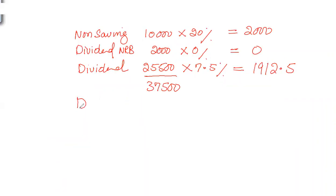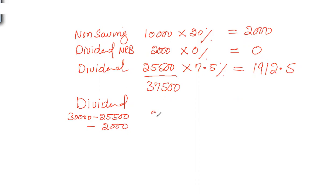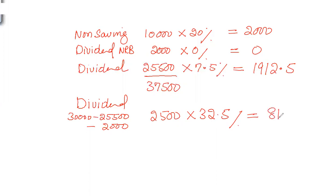Out of the £30,000 dividend, we have now covered £27,500 (£2,000 nil rate band + £25,500 at 7.5%). The remaining balance that falls in the higher rate band is £2,500, taxed at 32.5%, giving tax liability of £812.50. The total tax liability across all income is calculated by adding all portions together.